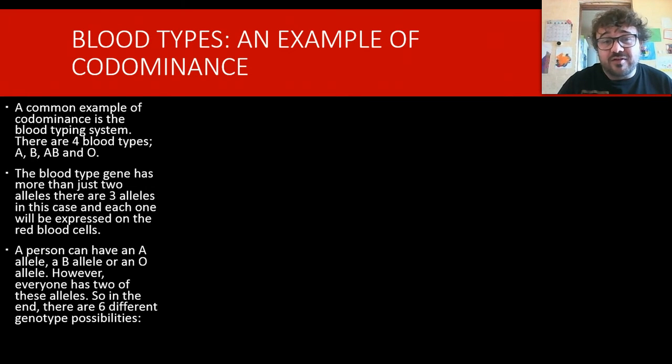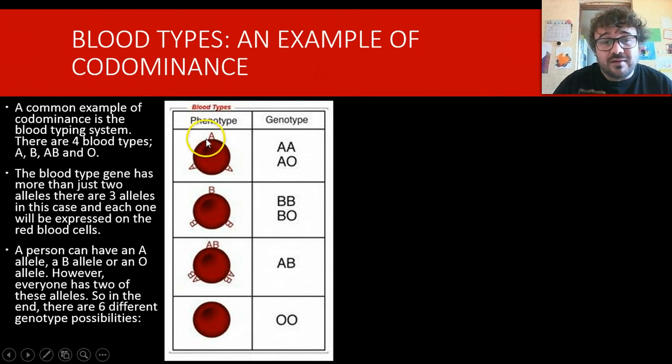You have two of each allele. So, there's six different possibilities. You can be six different genotypic possibilities. So, you can be AA or AO. You can be BB or BO, AB or OO. Now, very interestingly, you can only be four phenotypes. You can be A, B, AB or O.